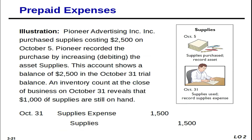Here's an example: Pioneer Advertising Inc. purchased supplies costing $2,500 on October 5th. Pioneer recorded the purchase by debiting the asset 'Supplies.' That's the original journal entry — debit Supplies for $2,500, and depending on whether purchased with cash or on account, credit Cash or credit Accounts Payable. The account shows a balance of $2,500.